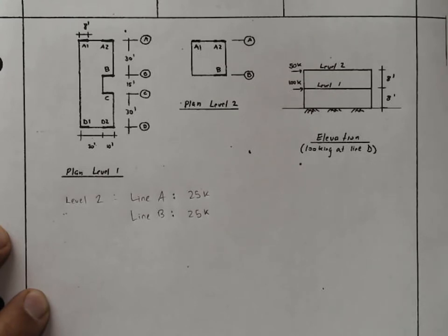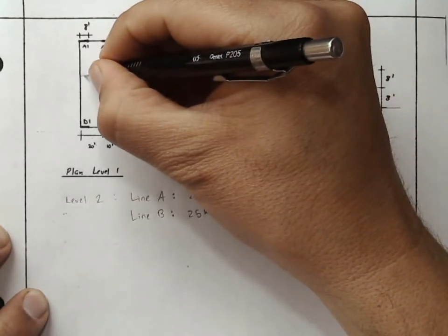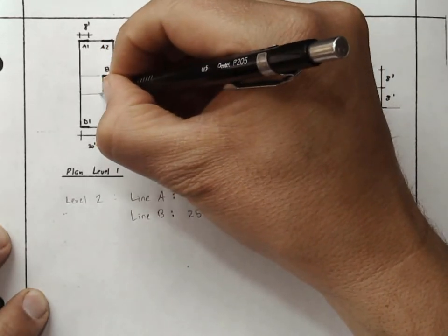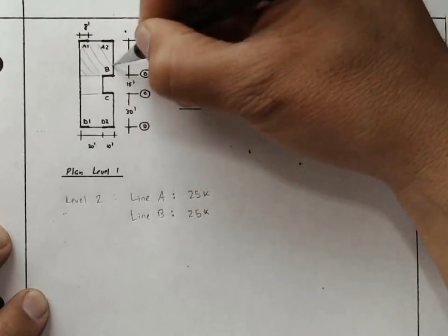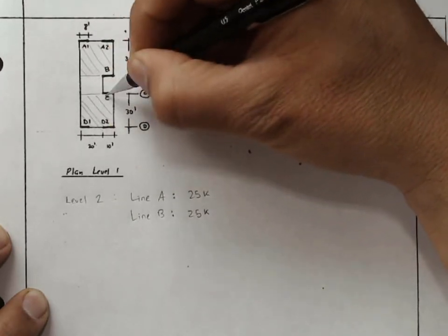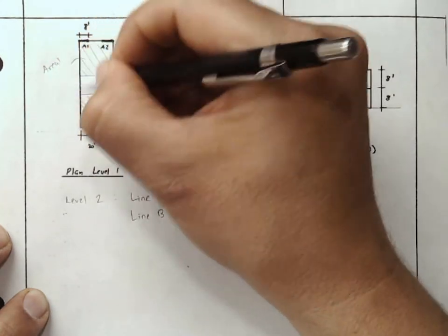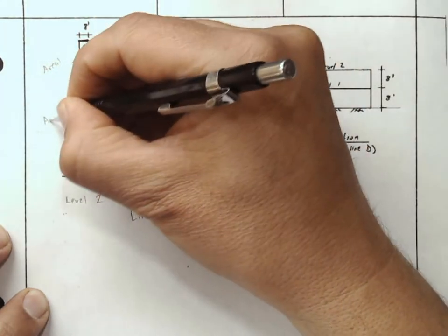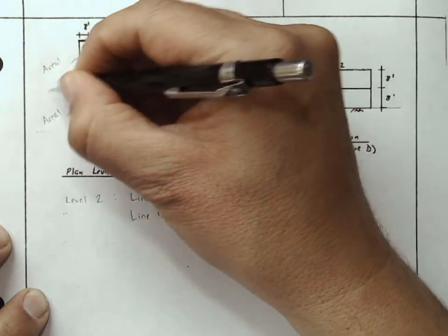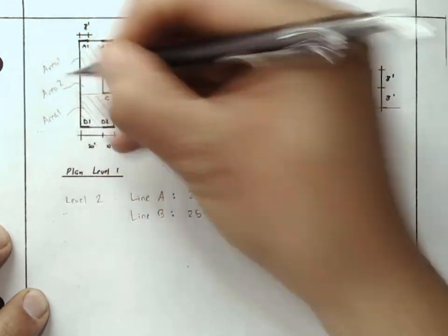We'll see later how to divide the force out into walls A1 and A2. Now let's look at level 1. For level 1, we need to divide out the different areas because we allocate the force proportional to each area. So we'll look at these dividing lines here. We'll identify that these two areas are the same size. We'll call this area 1, area 1, and we'll call this area 2.